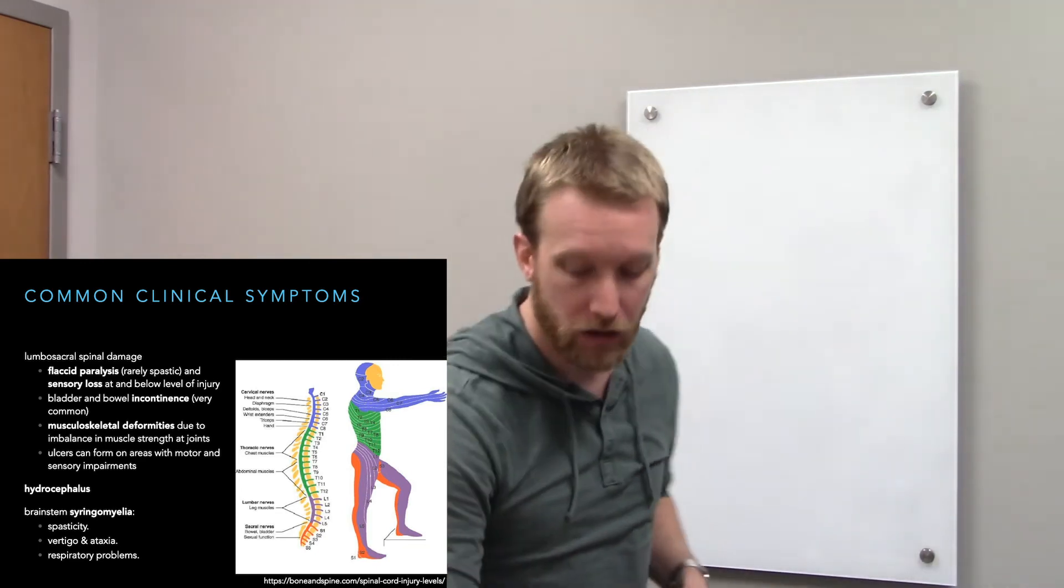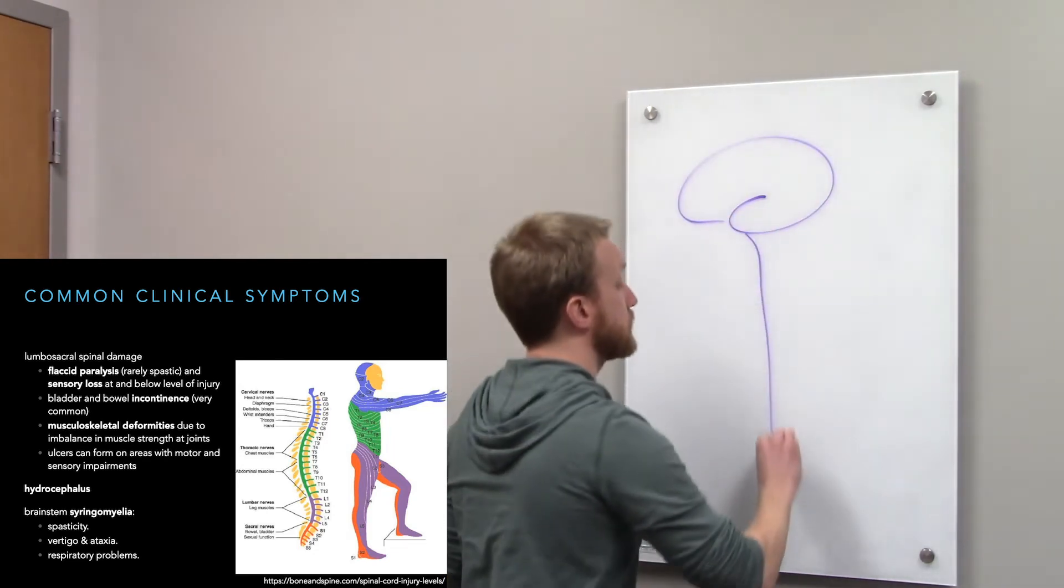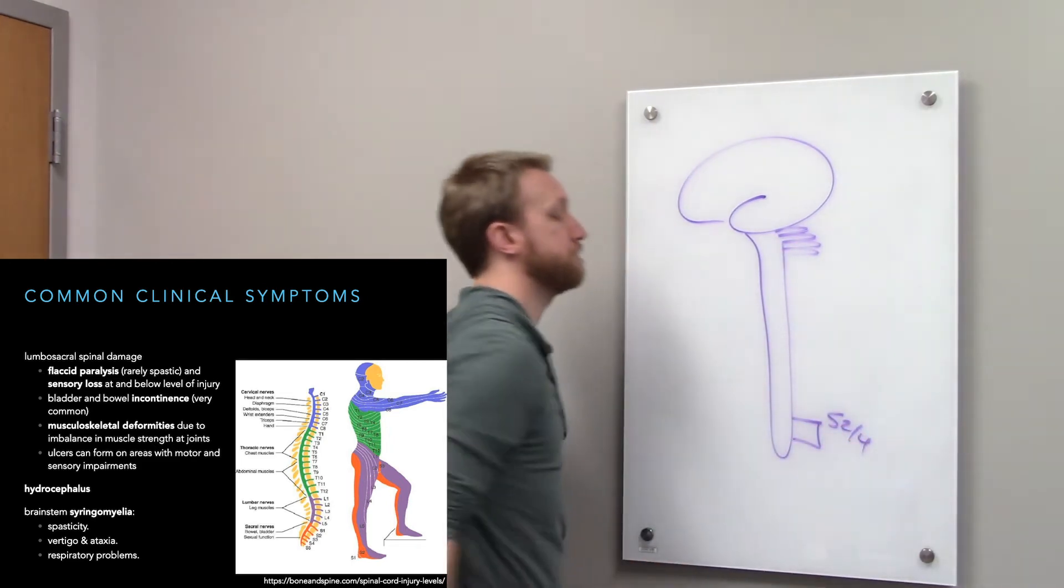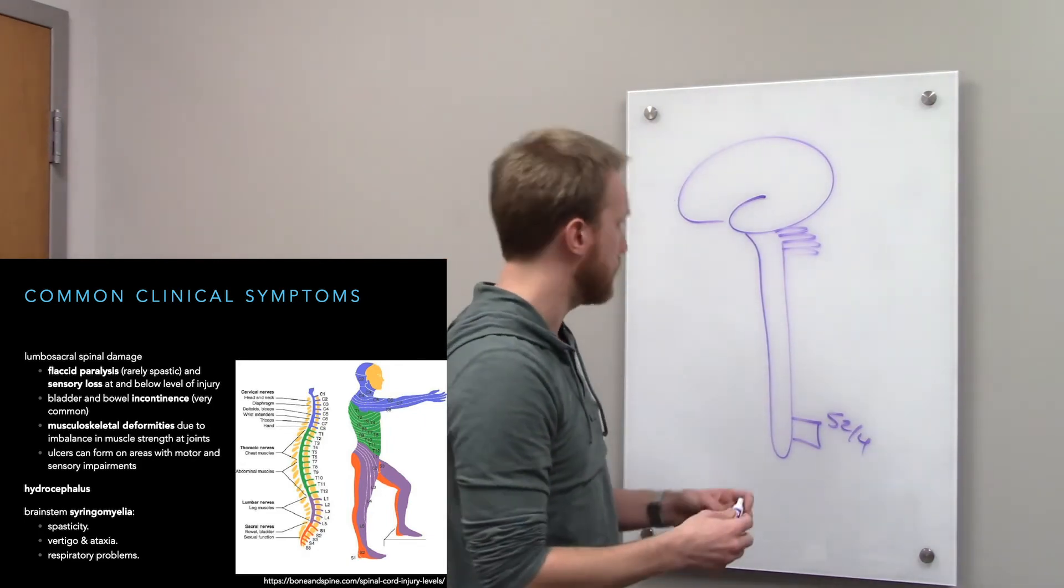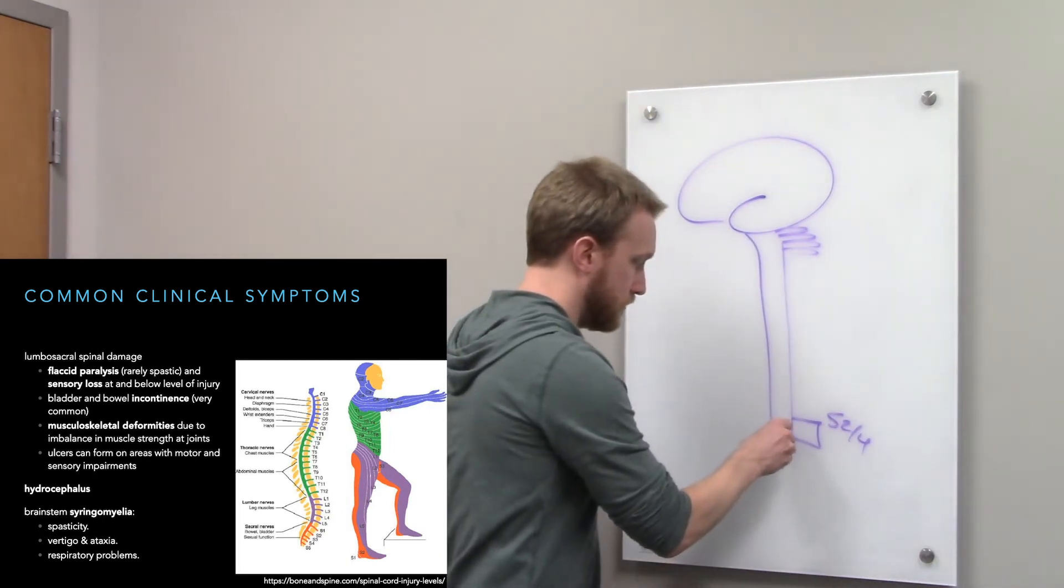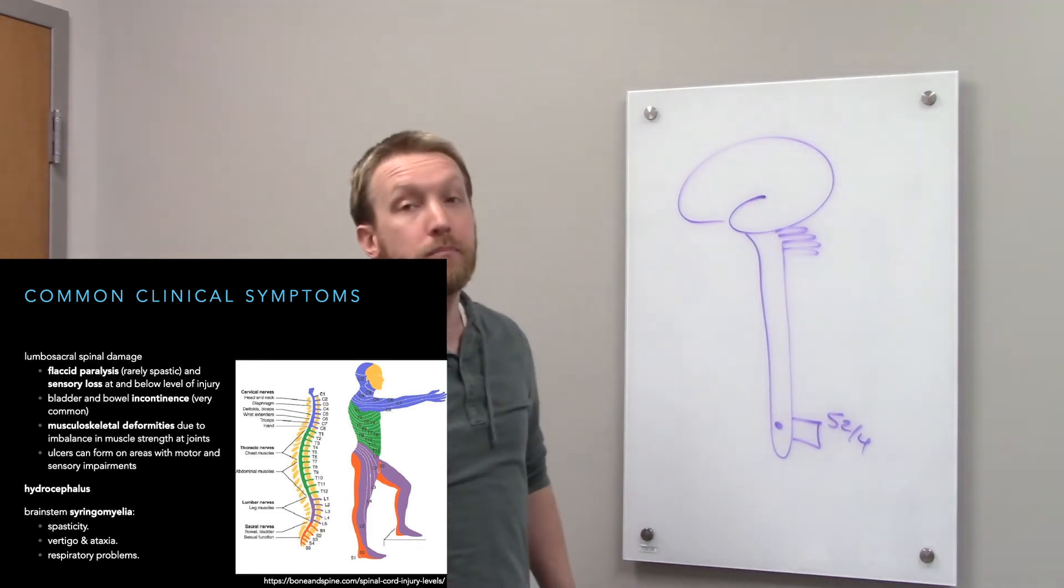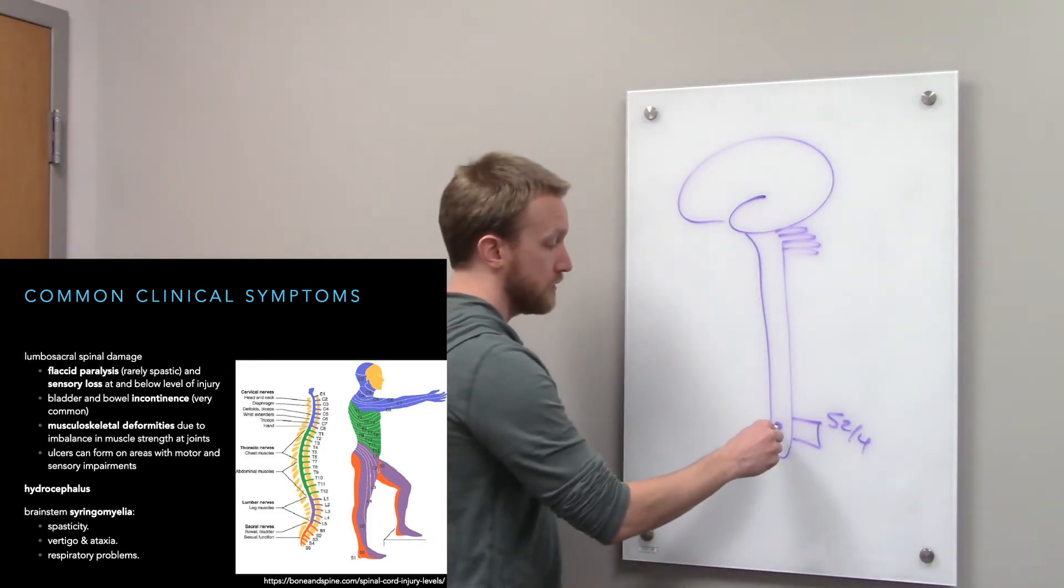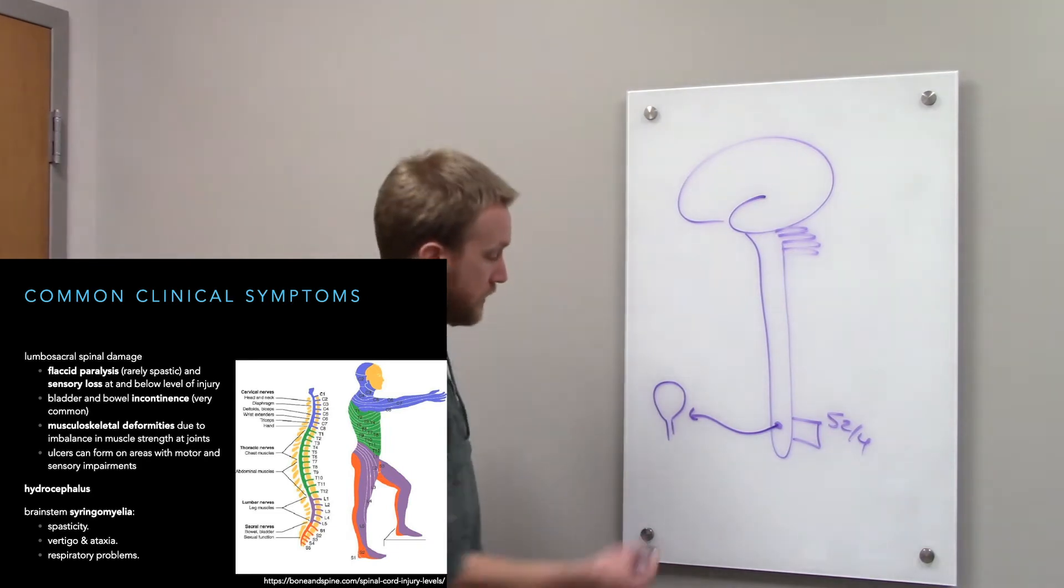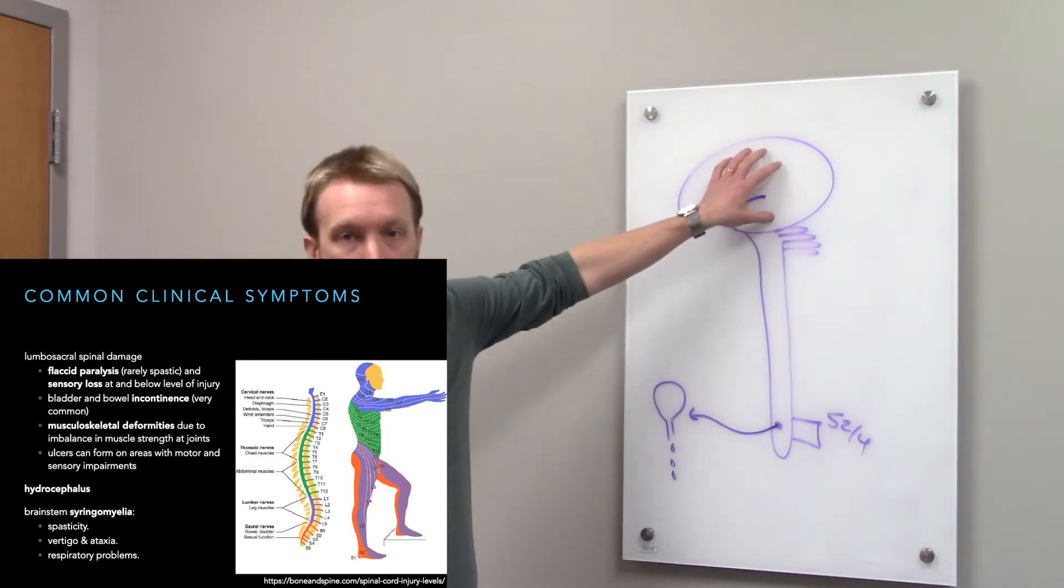Bladder and bowel incontinence. This is almost always an issue with spinal cord injuries, because of where those neurons live. They live down at the bottom, down in the sacral spinal cord. The preganglionic parasympathetic neurons live down in the sacral spinal cord. They are going to innervate, in this case, the bladder, and they'll cause the bladder to constrict and us to urinate. These are not regulated by upper motor neurons in the cortex. Instead, they're regulated more by neurons in the brain stem.